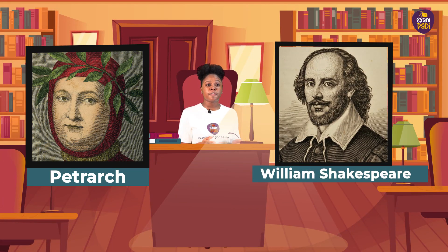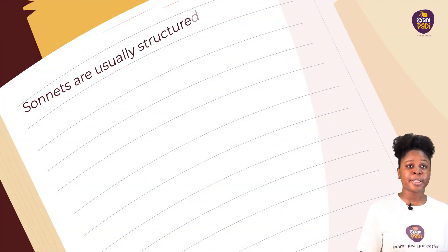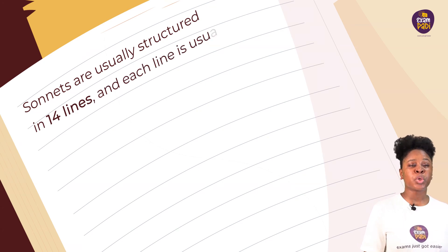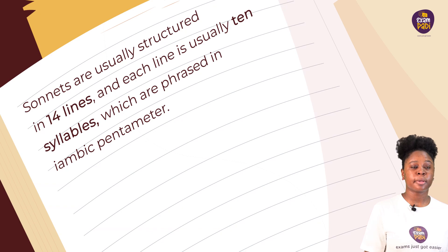There are two main sonnet forms, which are the Petrachan or Italian sonnets and the English or Shakespearean sonnets. The fun fact about sonnets is the word comes from the Latin word for little sound. Sonnets are usually structured in 14 lines, and each line is usually 10 syllables, which are phrased in an iambic pentameter.